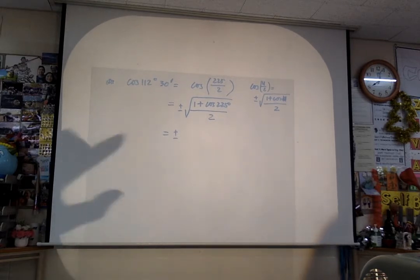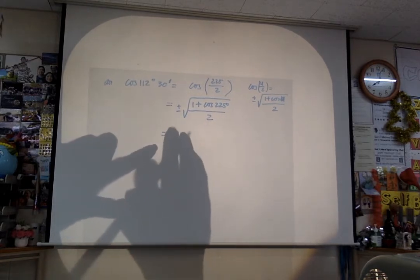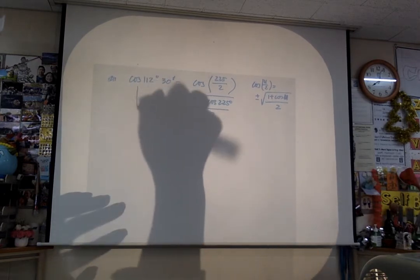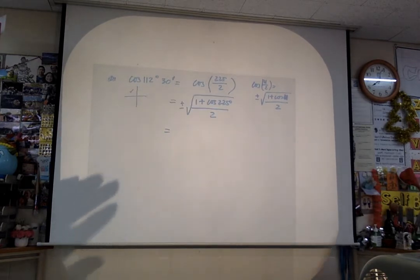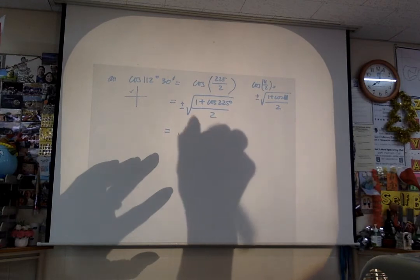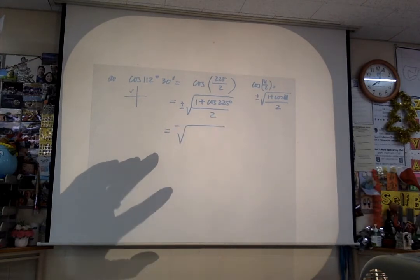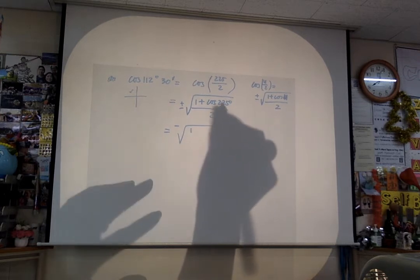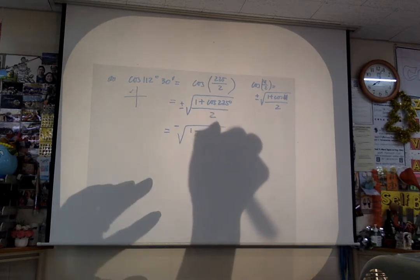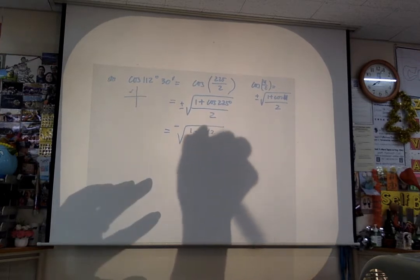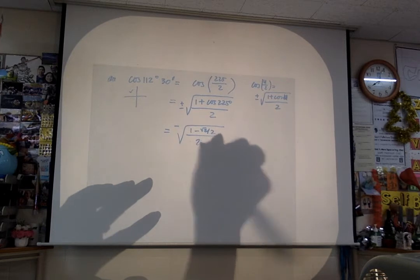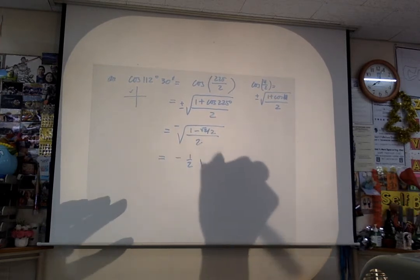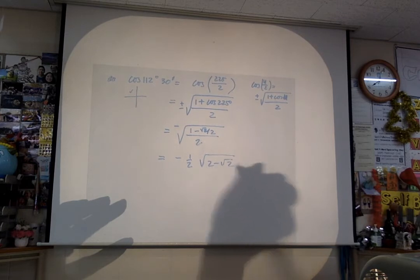Let's stop putting plus or minus — isn't it just negative? Because this angle lies in the second quadrant, cosine is negative. So you get: negative square root of 1 plus cosine 225 — that's negative root 2 over 2 — all over 2. You end up with negative one-half times square root of 2 minus root 2.